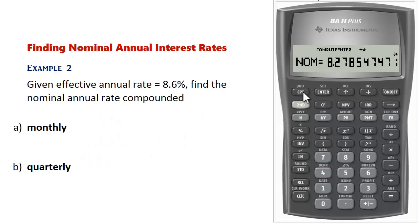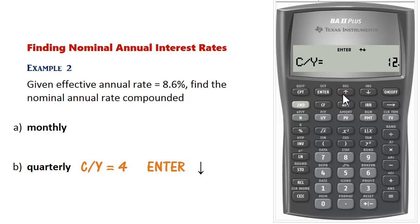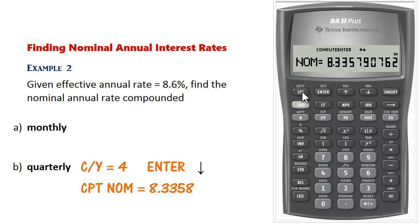To find the nominal rate compounded quarterly, scroll up, change CY to 4, press Enter, scroll back down, and compute nominal. So 8.6% compounded annually is equivalent to 8.3358% compounded quarterly.